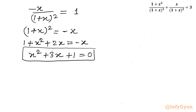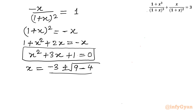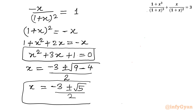This is a quadratic equation. Applying the Sridharacharya (quadratic) formula: x = (−b ± √(b² − 4ac)) / 2a = (−3 ± √(9 − 4)) / 2 = (−3 ± √5) / 2. So there are only two solutions for the given rational equation.